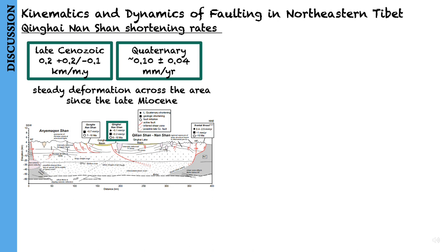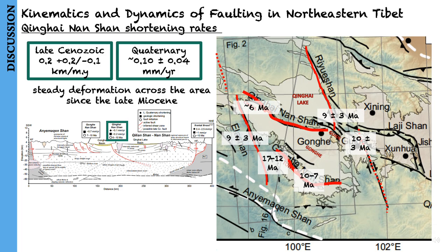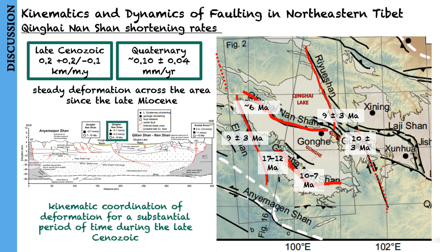Furthermore, it appears that the major fault networks all around the margins of the Gonghe complex initiated over a narrow time window between around 10 million years ago and 6 million years ago. The similar ages of fault initiation and steady deformation imply that the presently active faults have experienced kinematically coordinated deformation for a substantial period of time during the late Cenozoic.